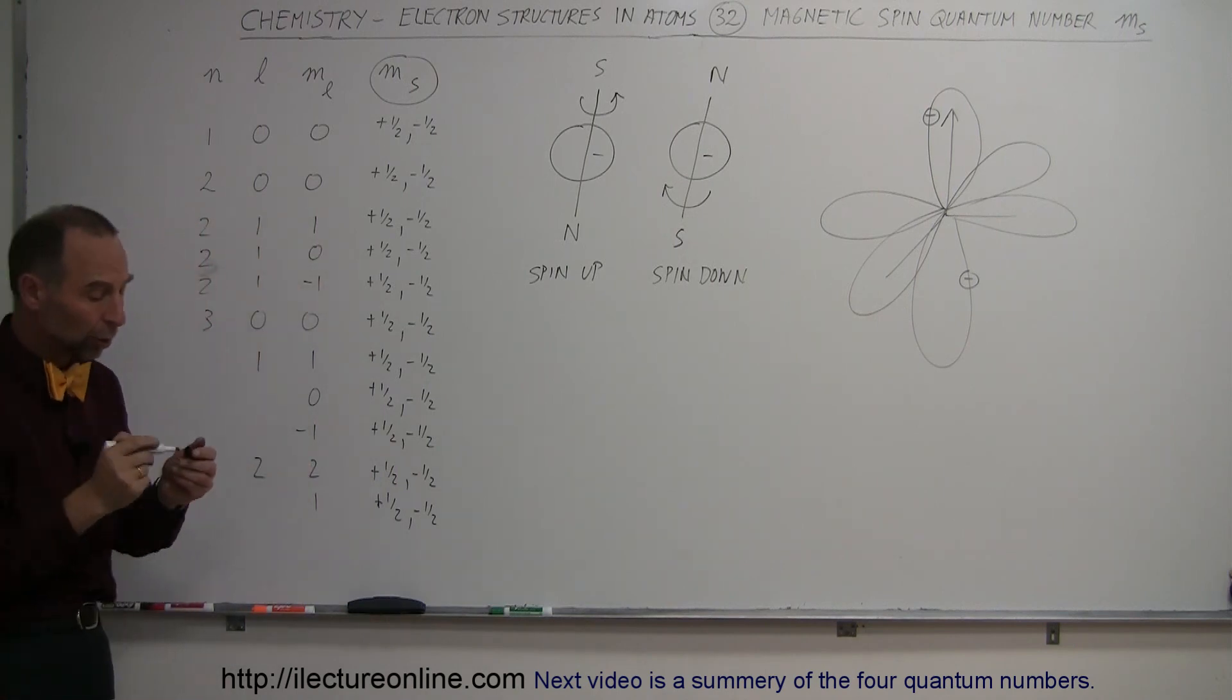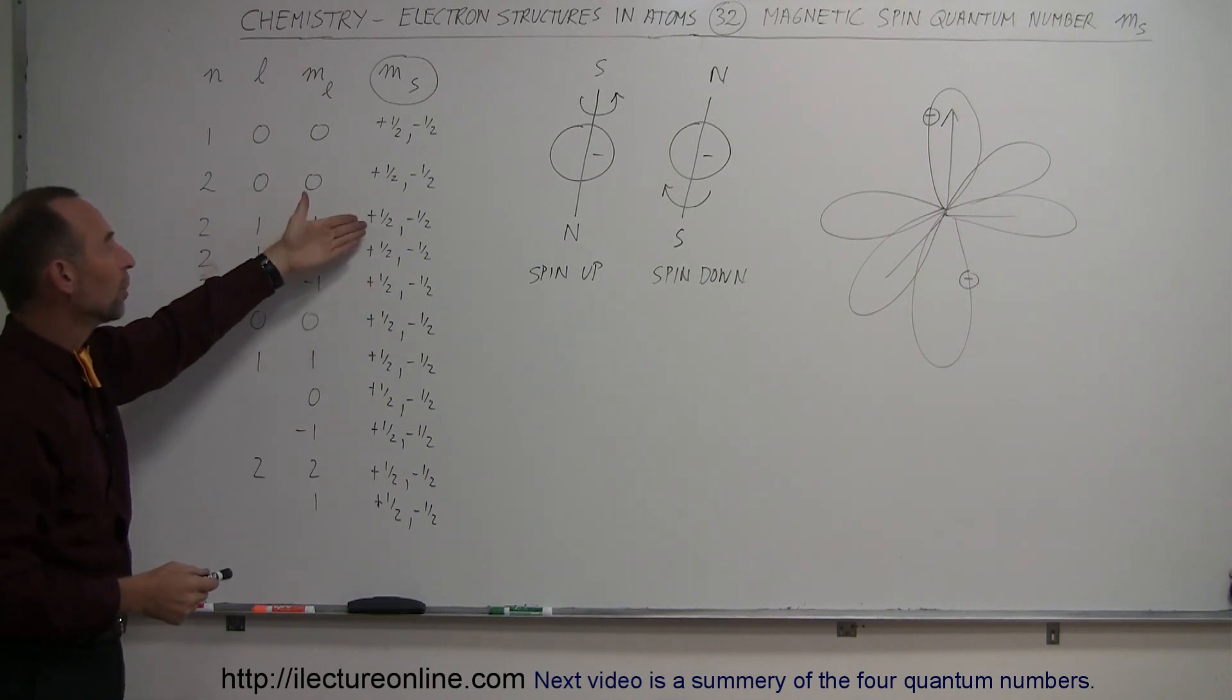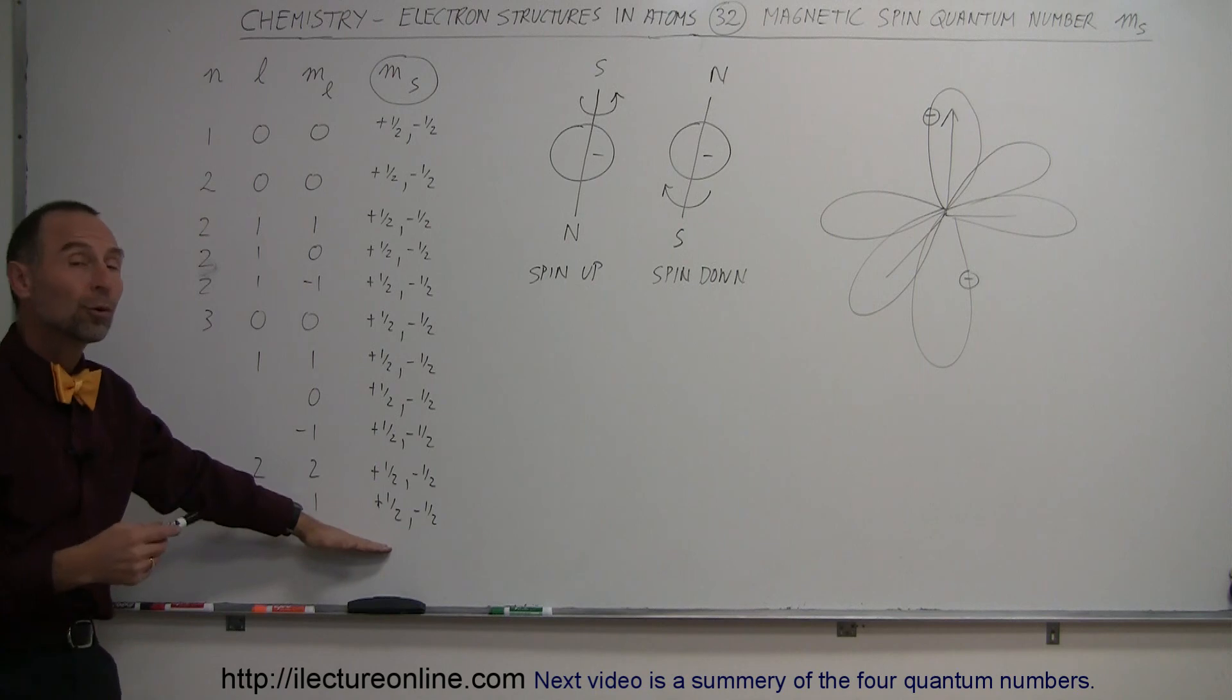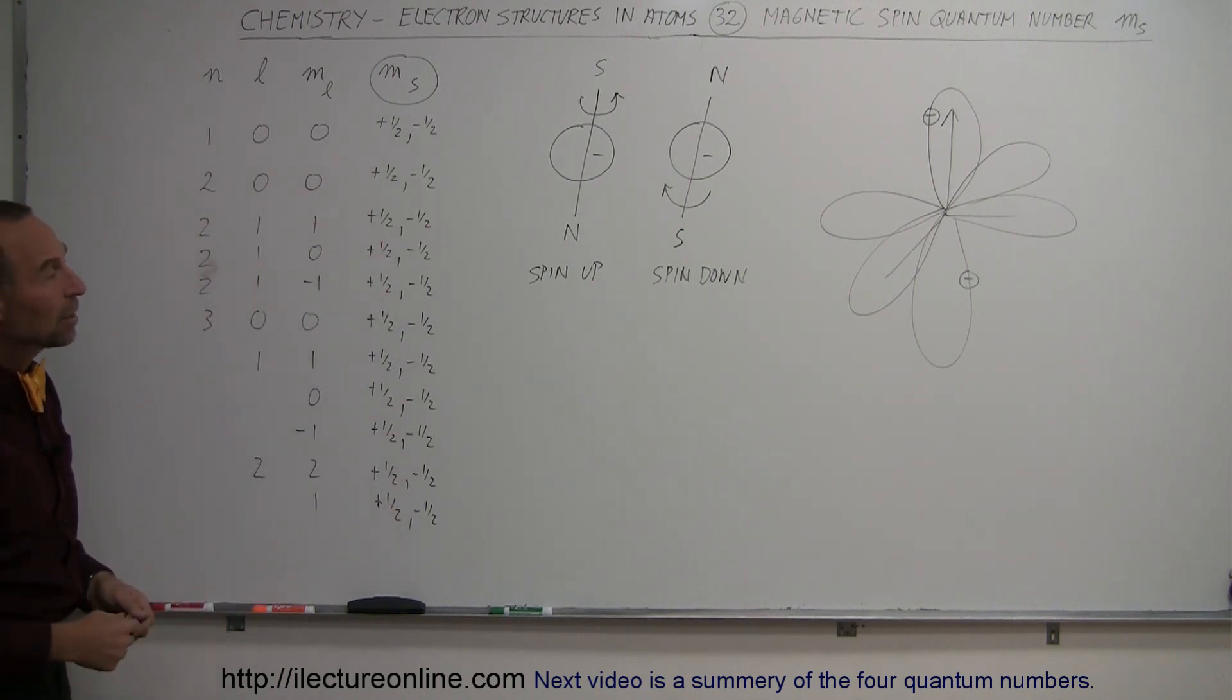You can see that for each combination of quantum numbers, each one represents a single orbital. And for each single orbital, you can have two electrons: one spin up, one spin down. That's the significance of the enumeration of the spin quantum number—that's how we notate that.